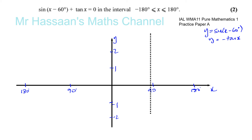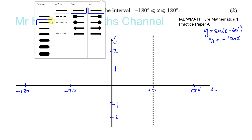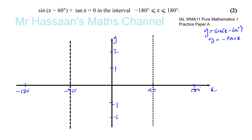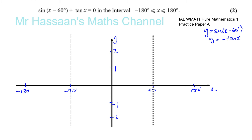You have one asymptote going straight down at 90. Then you have another asymptote at minus 90, and that's minus 90 and minus 180. Every 180 degrees it repeats. So at 90 and minus 90 you'll have asymptotes. The next ones would be at 270 and minus 270, which we don't need.